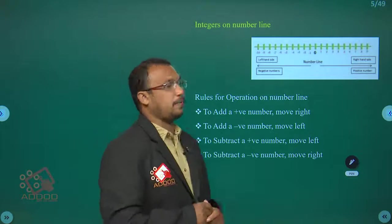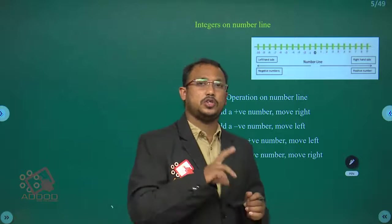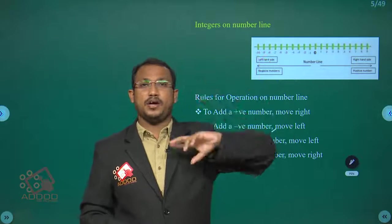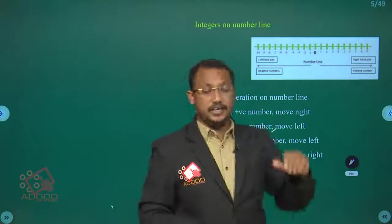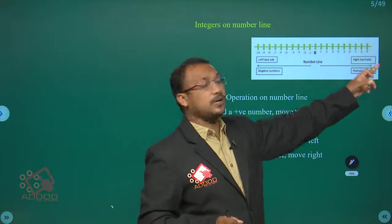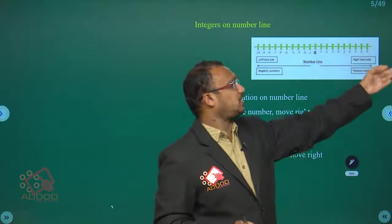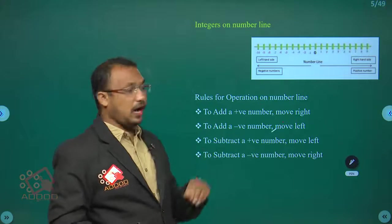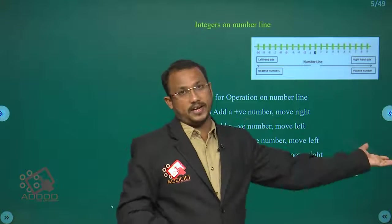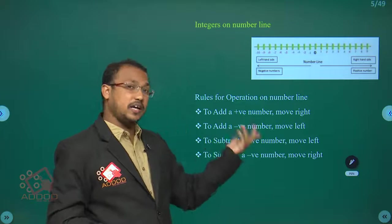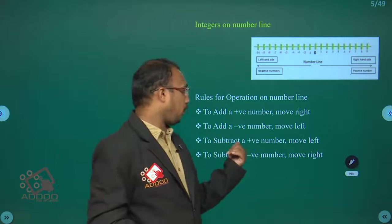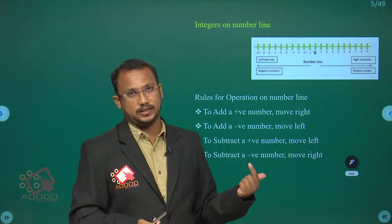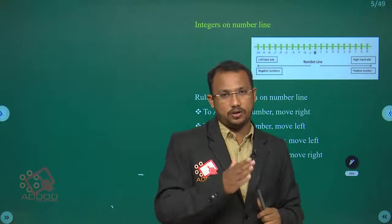Next, let's see integers on a number line. A number line is a line with numbers on it. On the right side you have positive numbers and on the left side you have negative numbers. To add a positive number, move to the right. To add a negative number, move to the left. To subtract a positive number, move left; to subtract a negative number, move right — opposite signs.